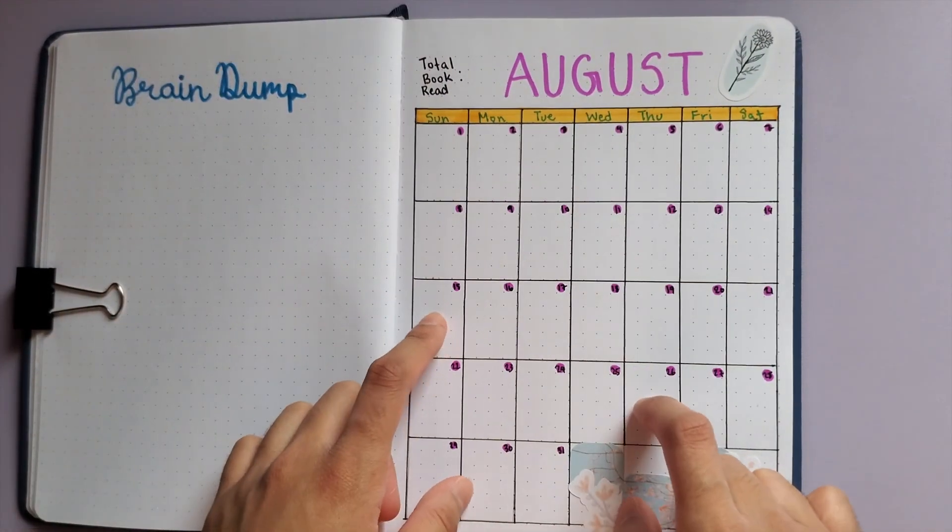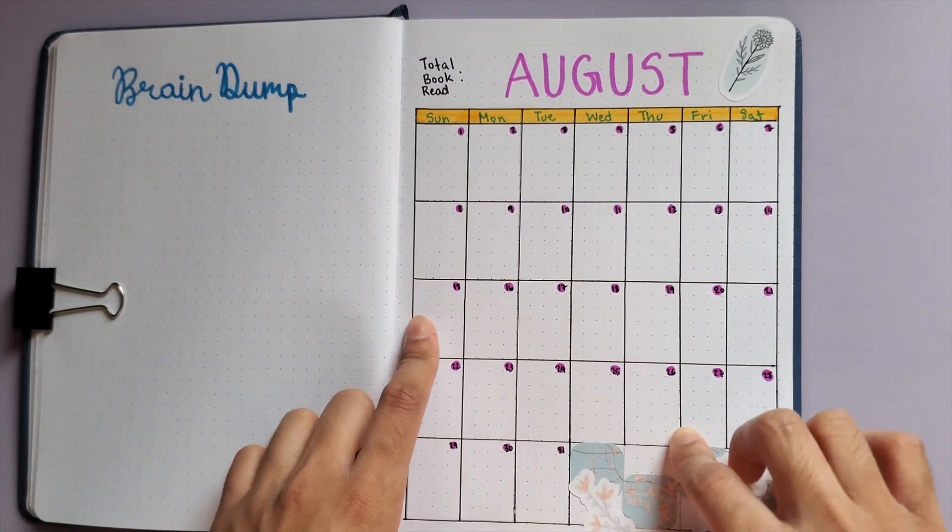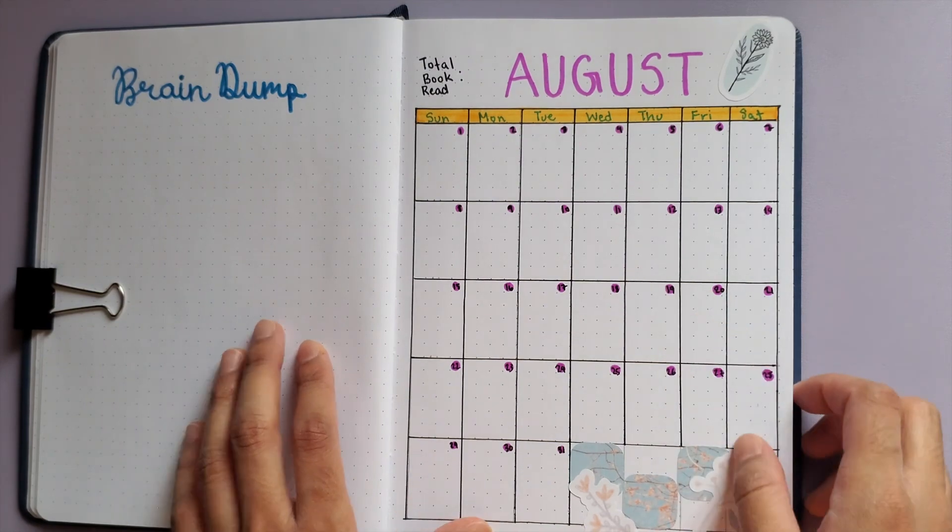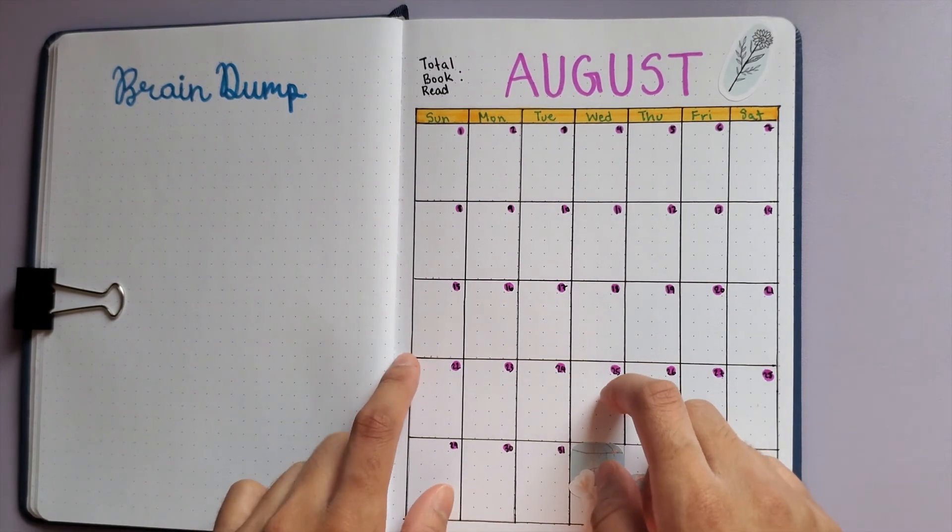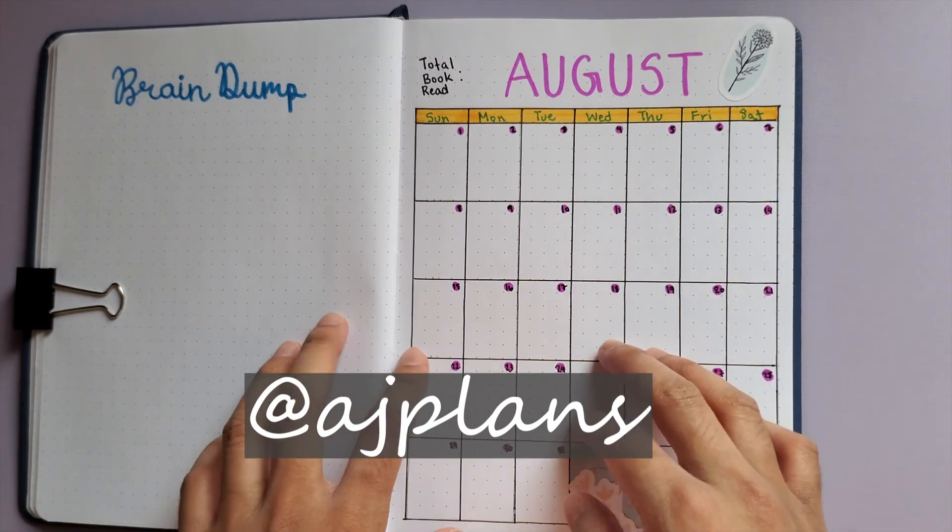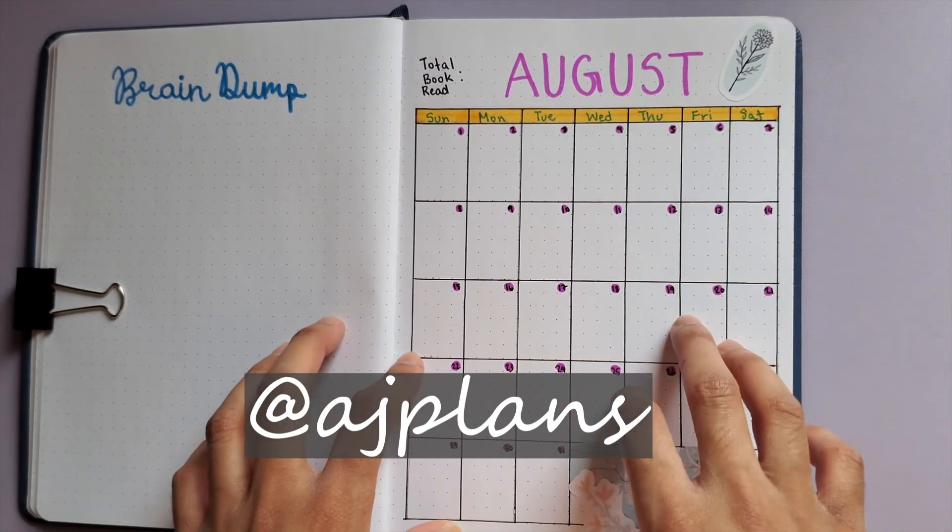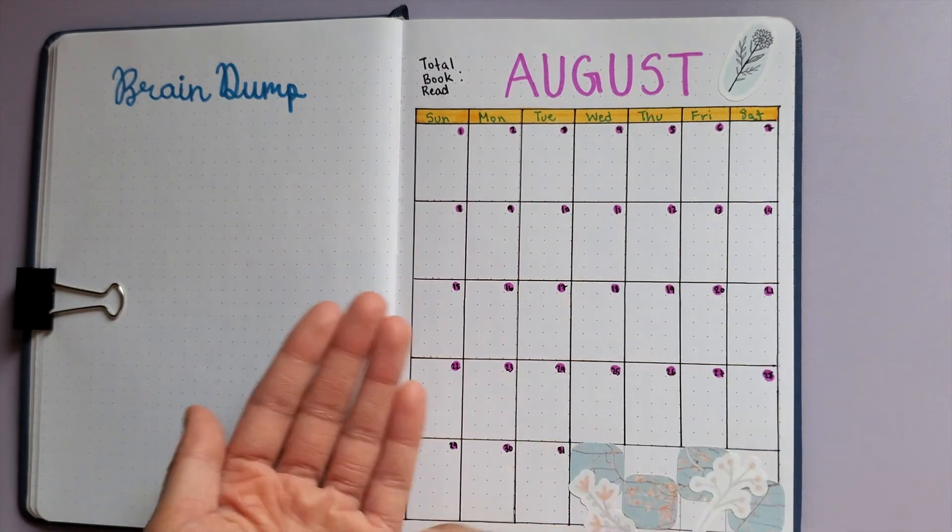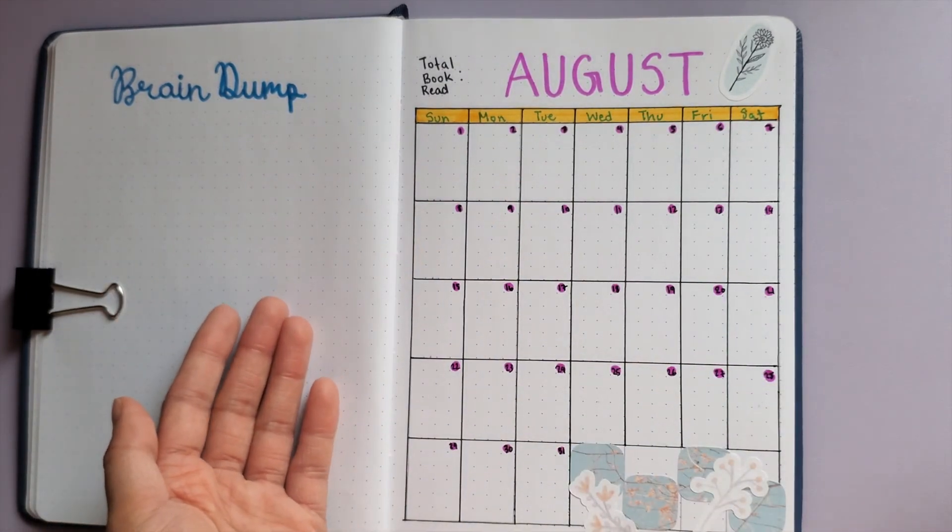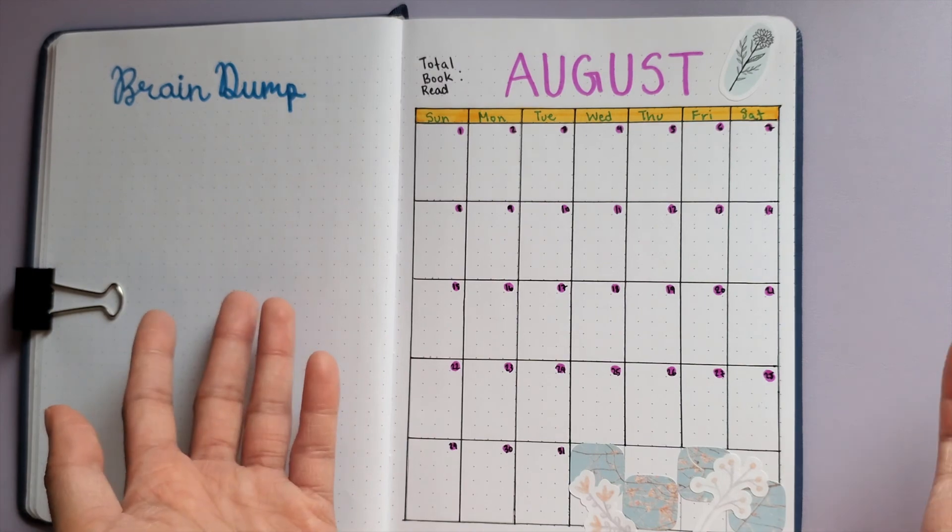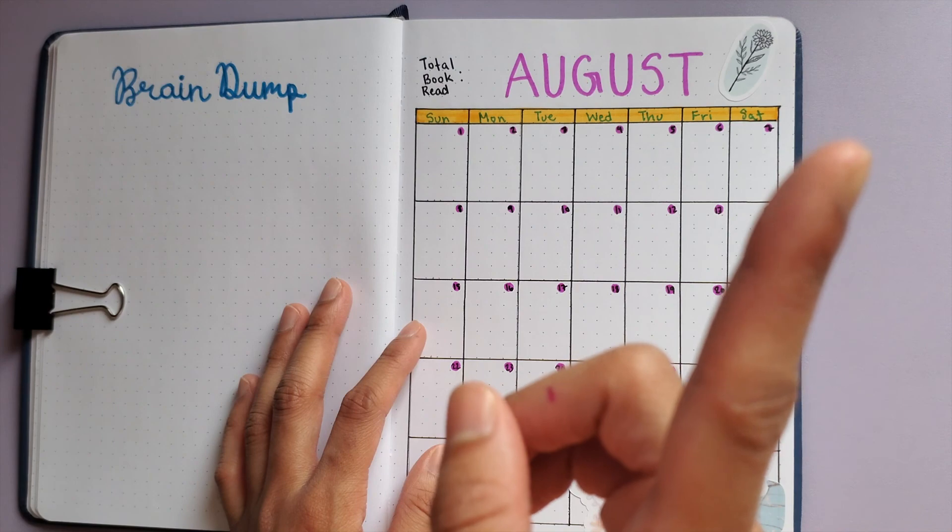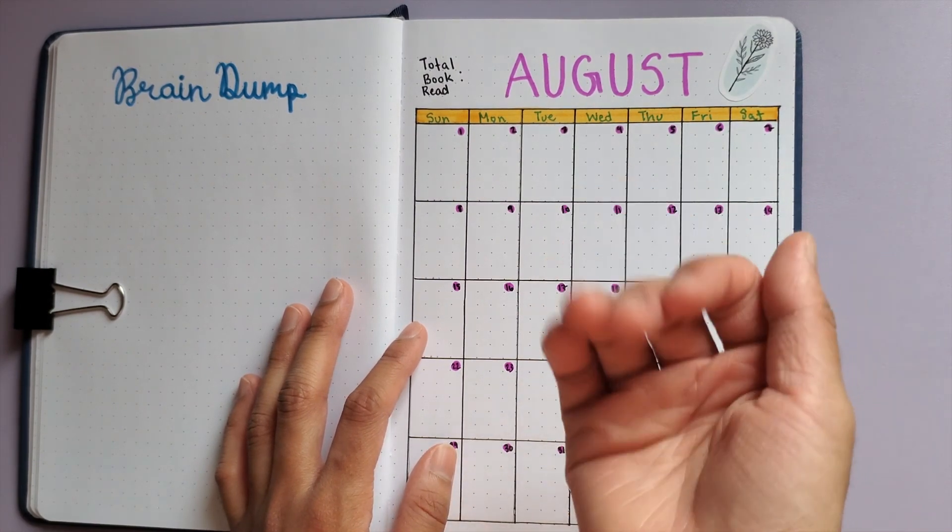For the rest of these, it'll be journaling. I'll do a wrap-up that'll be posted in September for August's books. Thanks for watching! Don't forget to follow me on Instagram at AJ Plans. Like this video, subscribe, and hit the bell notification if you're interested in more of my future content. I do plan-with-mes every week for my Plum Paper planner, so if you're interested in those, check those out. Happy planning, guys! Bye!